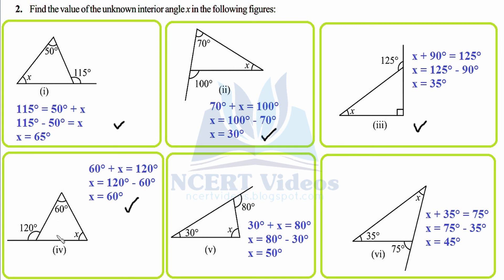So it will be an equilateral triangle with all angles 60°. Three angles of a triangle sum to 180°, so 180 minus 120 gives 60°. You can also check with the linear pair: 60 plus 120 equals 180°. That was the fourth figure.